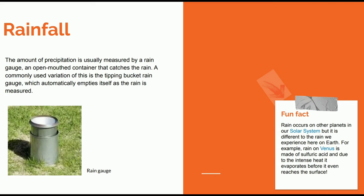Fun fact: rain occurs on other planets in our solar system, but it is different from the rain we experience on Earth. For example, rain on Venus is made of sulfuric acid, and due to the intense heat it evaporates before it even reaches the surface.